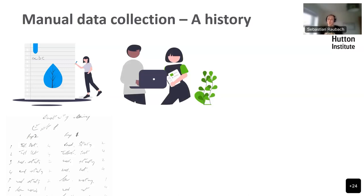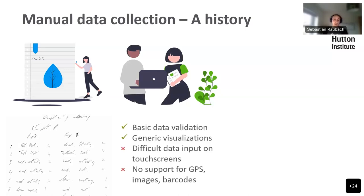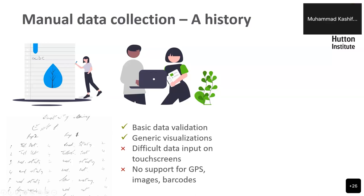The next step forward would be to get rid of the step where you just write things down. A lot of people would think that a spreadsheet like Excel might be a good idea — just type the data straight into that. Again, there are some pros and cons. Excel or similar tools offer some basic data validation: you can add rules where it highlights cells outside a specific range. It also offers generic data visualizations like line charts and bar charts. The problem with Excel on mobile devices with touch screens is that data input really isn't all that great for entering large amounts of data.